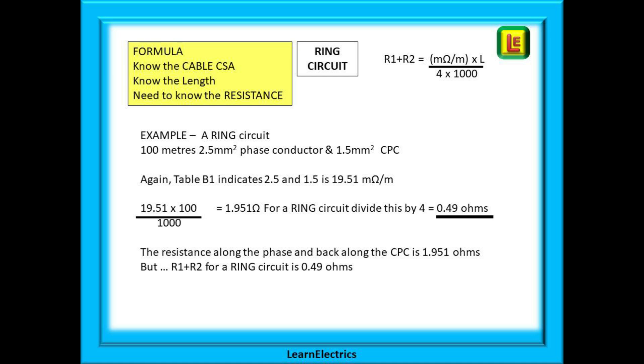It is the same calculation as the radial circuit except that we divide the answer by 4. Here we go then. 19.51 milliohms multiplied by 100 meters and divided by a thousand gives 1.95 ohms of resistance, and then divide by 4 to give 0.49 ohms. This 0.49 ohms is the R1 plus R2 for a ring circuit. Hopefully you can see that resistance values in ring and radial circuits are not the same.